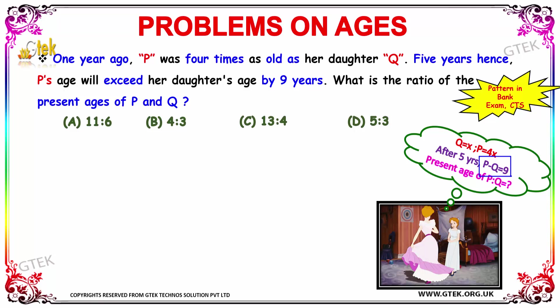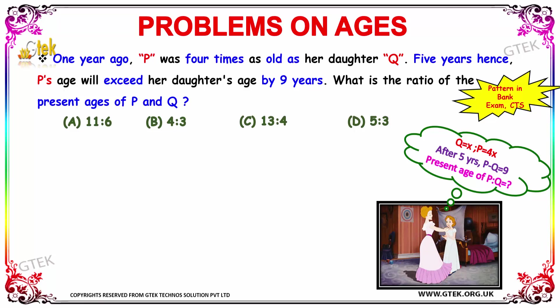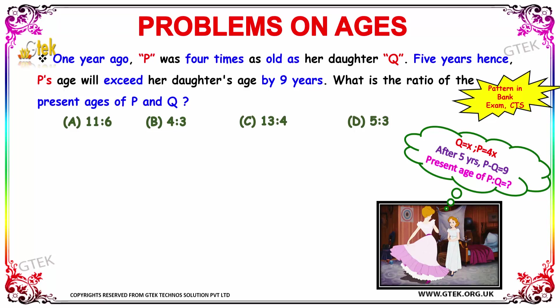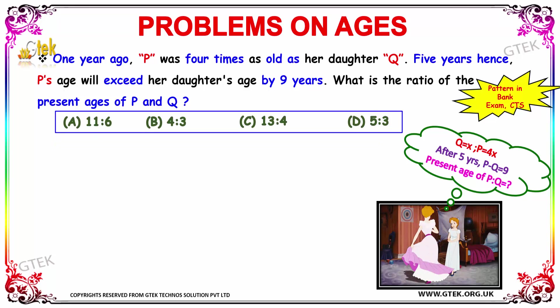We have to find the ratio of the present ages of P and Q. Our options are given as follows: 11 is to 6, 4 is to 3, 13 is to 4, and 5 is to 3.